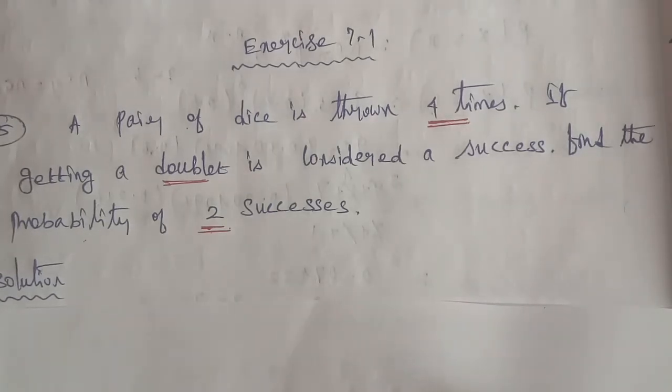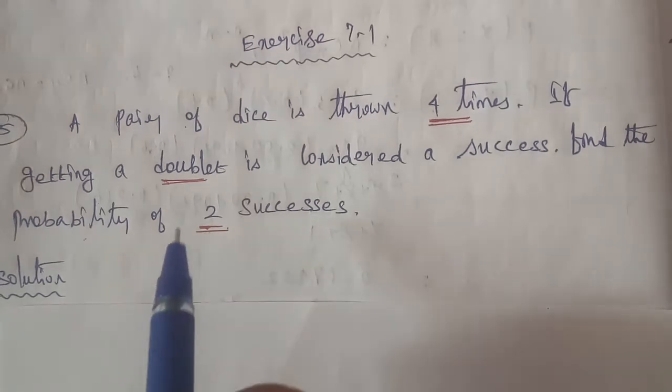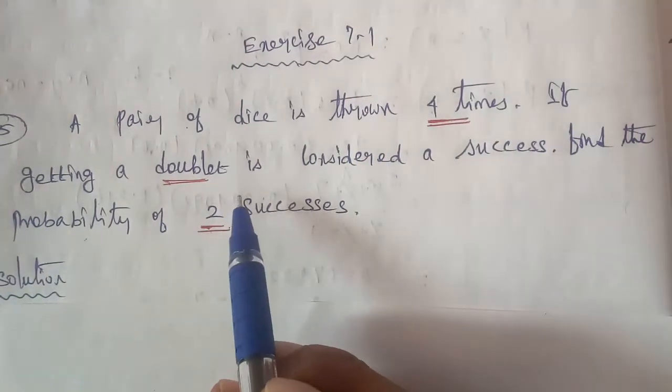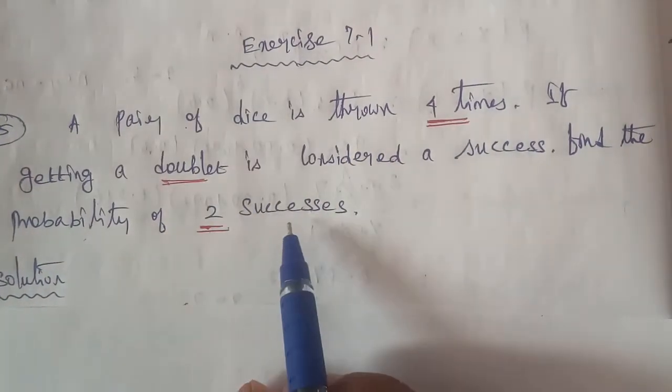Hi students, I am Gopinath. I am teaching the business mathematics chapter number 7, probability distribution, exercise 7.1, question number 5. A pair of dice is thrown four times. If getting a doublet is considered a success, find the probability of two successes.